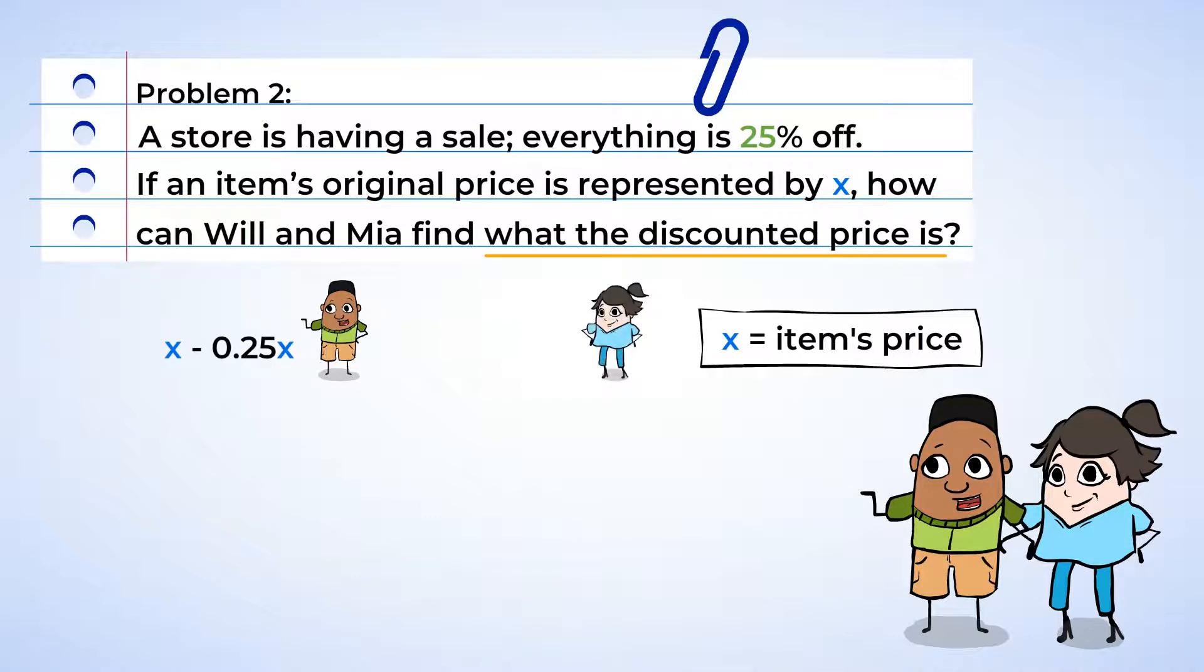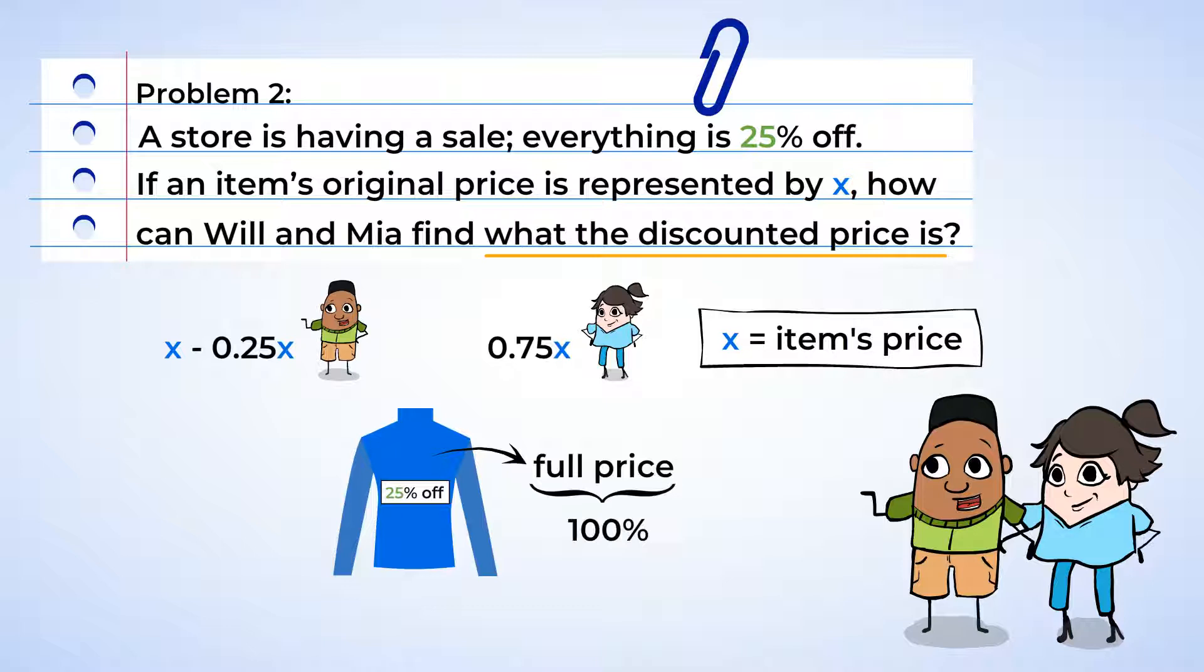But Mia says you can just multiply the item's price by 75 hundredths. Well, if we have the item's full price, that is 100% of the price. And we're discounting here, or subtracting 25% of the cost. Now this gives us 75% of the item's original price. So it looks like both Mia and Will found different, but correct ways to find the discounted price.